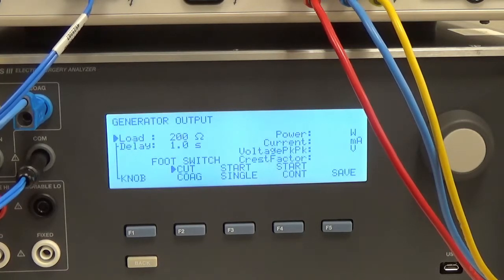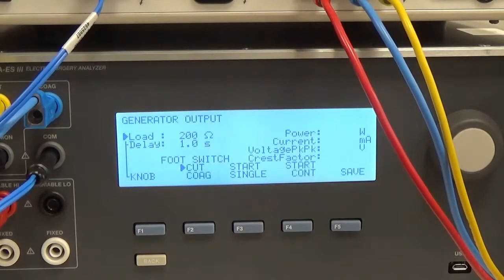You can save your data on the right. Now when we start our test, all of the information that we want is going to be on the right side. We're going to get power measured in watts, current measured in milliamps, peak-to-peak voltage, and a crest factor.